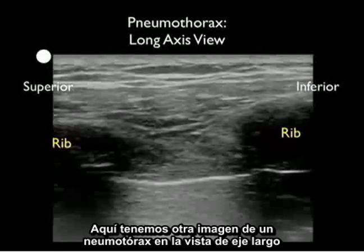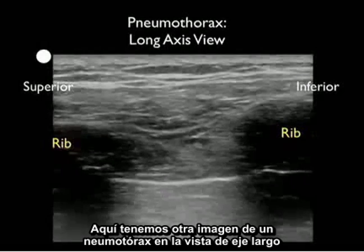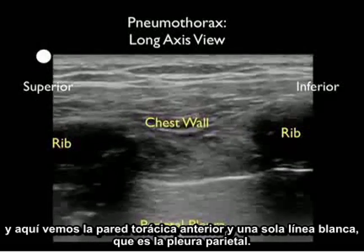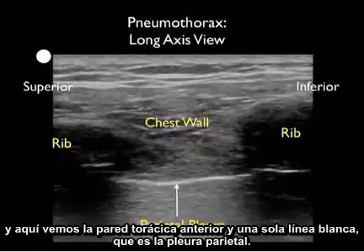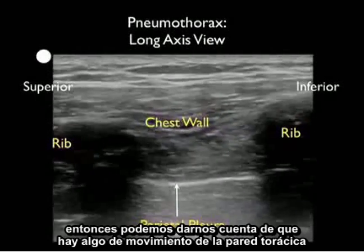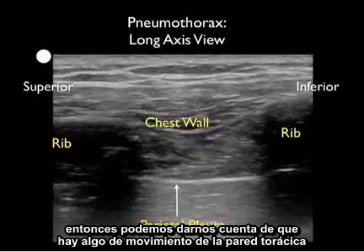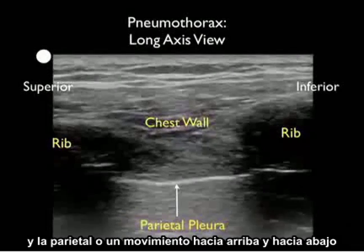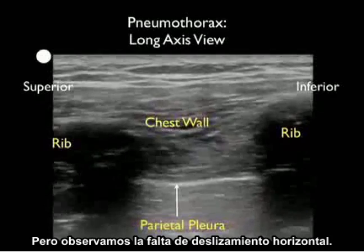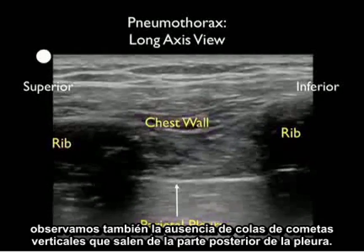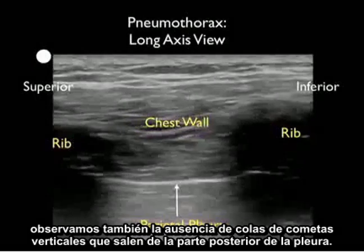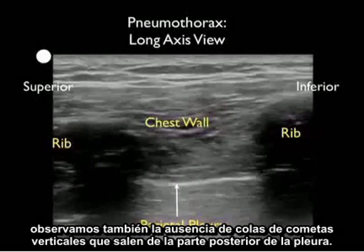Here's another image of a pneumothorax in a long axis configuration. We see the chest wall anteriorly and the single white line which is the parietal pleura. This patient was acutely dyspneic, so notice there is some motion of the chest wall and the parietal pleura moves up and down, but notice the failure of horizontal sliding and the absence of any vertical comet tails coming off the back of the pleura.